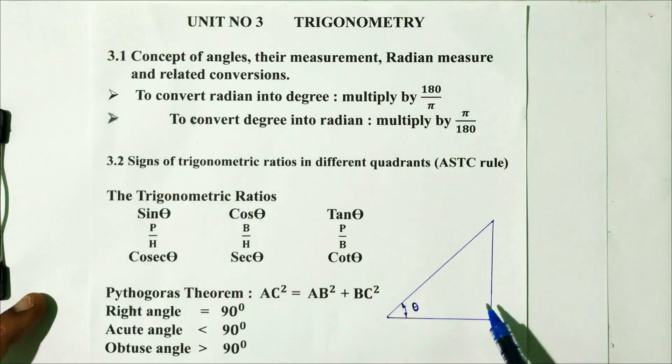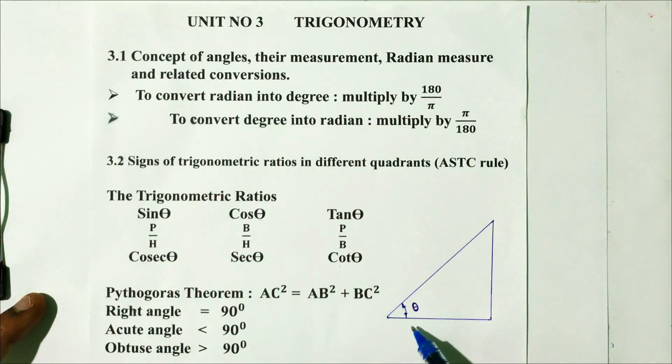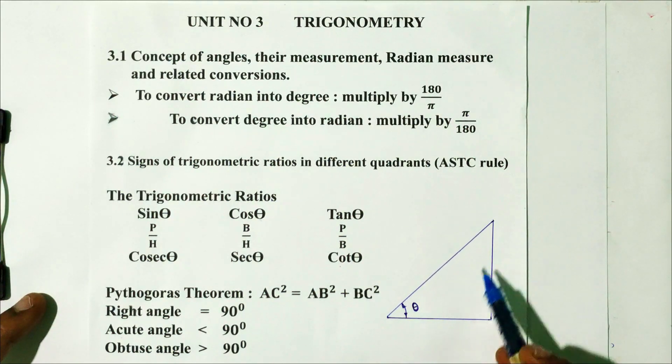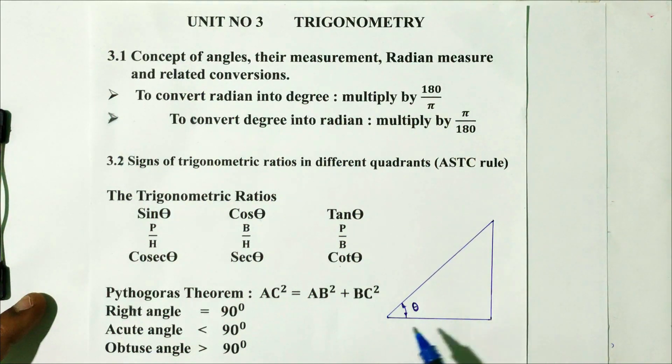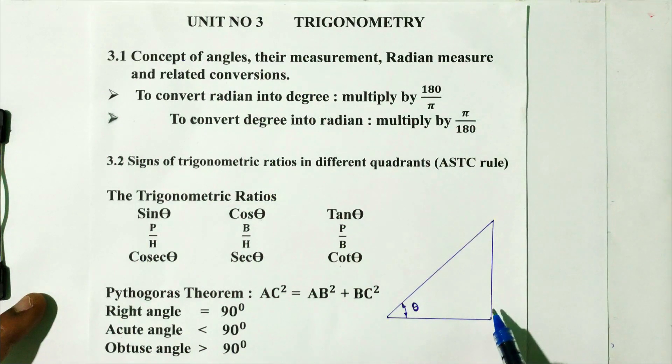Trigonometry is always applied on a right angle triangle. Right angle means the angle should always be 90 degrees.